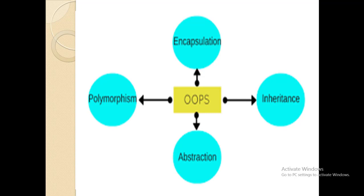Polymorphism is considered one of the important features of object-oriented programming. The word polymorphism means having many forms. We can define polymorphism as the ability of a message to be displayed in more than one form. For example, a person at the same time can have different characteristics — a man can be a father, a husband, and an employee simultaneously. So the same person possesses different behaviors in different situations. This is called polymorphism.